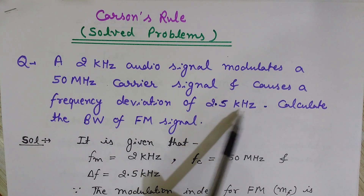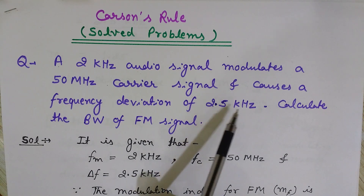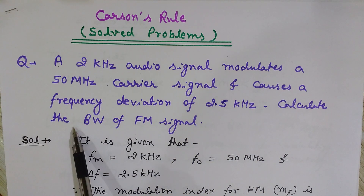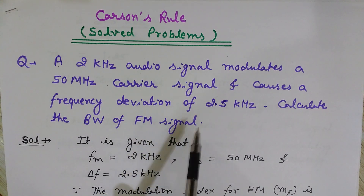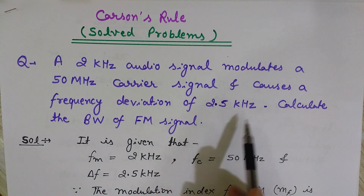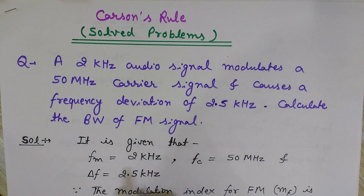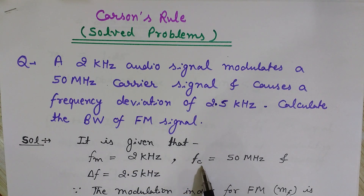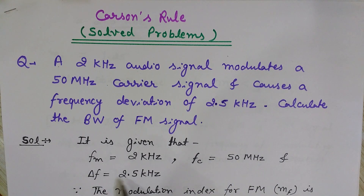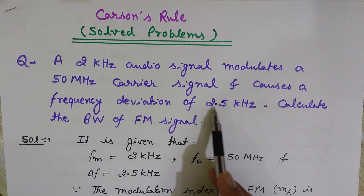This modulation causes a frequency deviation of 2.5 kilohertz — that is the frequency deviation in this FM problem. Now I want to find the bandwidth of this frequency modulated signal. It seems a very simple problem, but it is a little bit tricky because FM is 2 kilohertz, which is the maximum frequency present in the modulating signal, and FC is 50 megahertz.